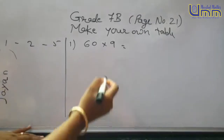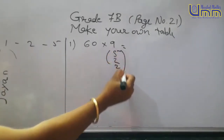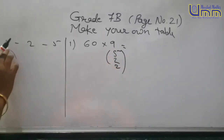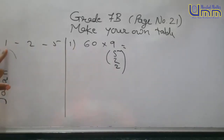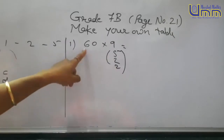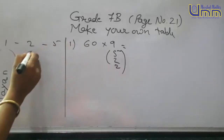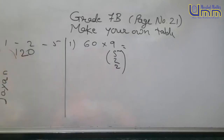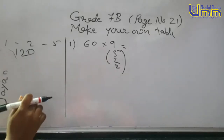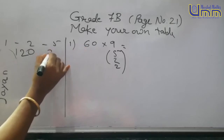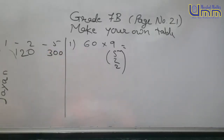9 ke liye hum logon ko kya chahiye? 5 and 2. Hum logon ko 1 ki zaroorat yahan par hai kya? Nahin hai. Lekin 60 to yahan par already diya hua hai, to hum log 1 ki value yahan par nahin nikalenge. 60×6 ja, 2 ja, 2 6 ja 12. Ab hum log 5 ki value nikalenge — take half, add 0. 60 ka half 30, add 0: 5 ki value 300.